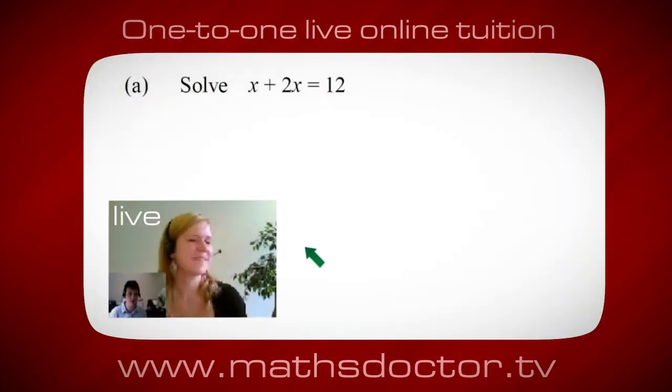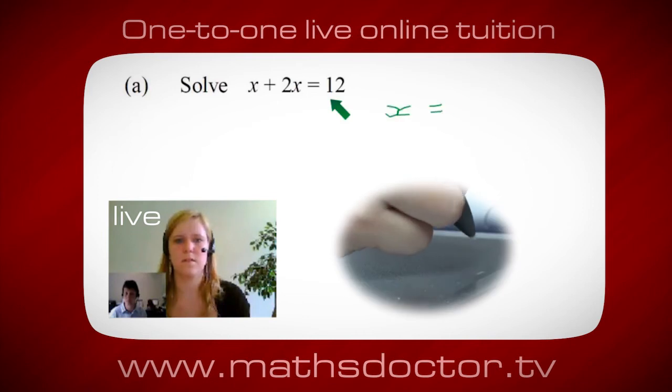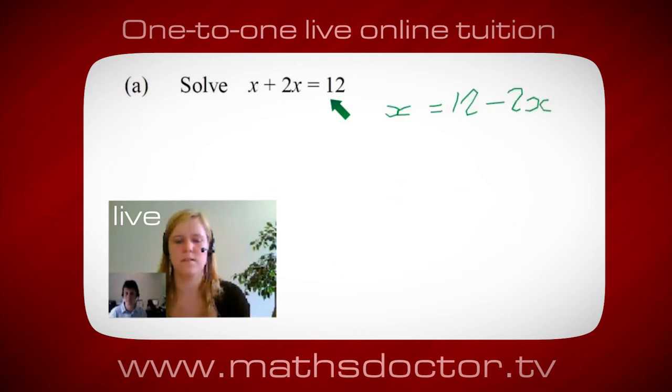Okay Marie, so let's have a look at this one. Solve x plus 2x equals 12. So what do you think you do first? Okay, well I want x on its own so I would put x equals 12 minus 2x.